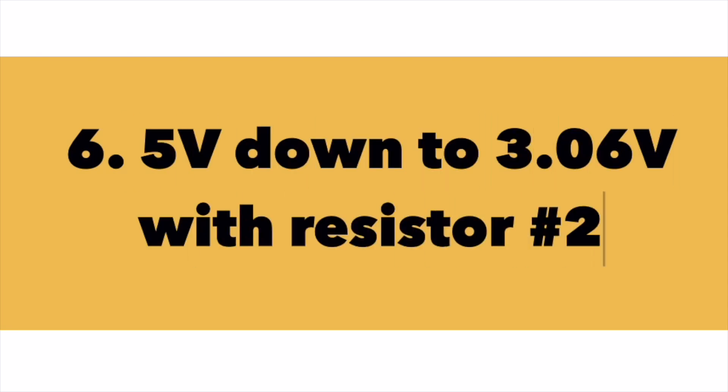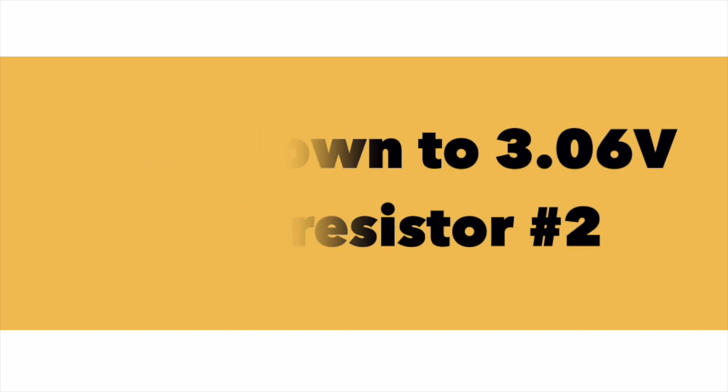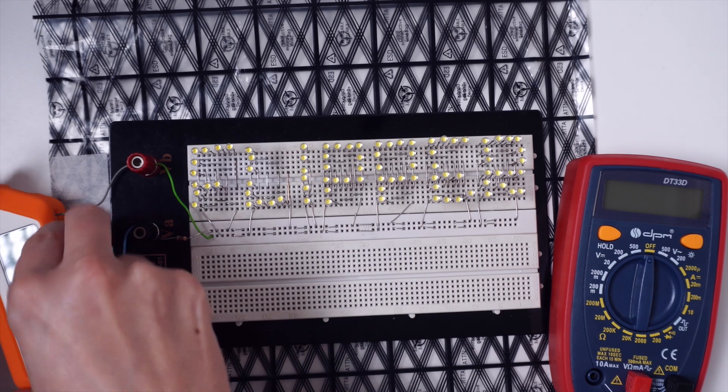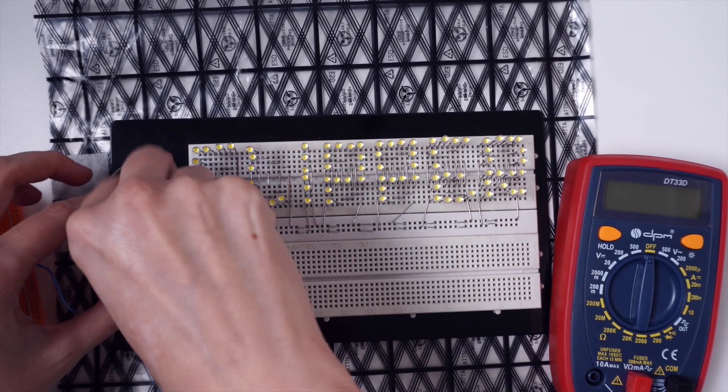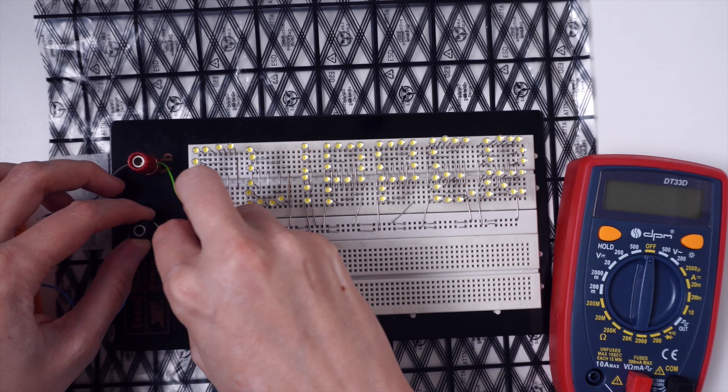Now let's look at another use case where we will bring down the voltage to around 3.06 volts with a different resistor. So we will unplug everything and we will also remove the resistor number one and swap it with resistor two.